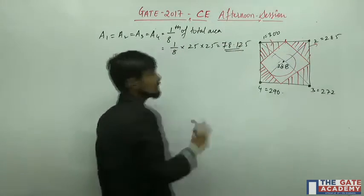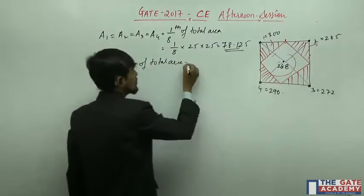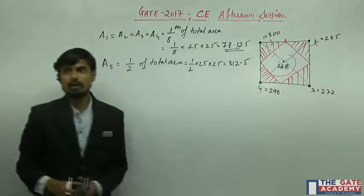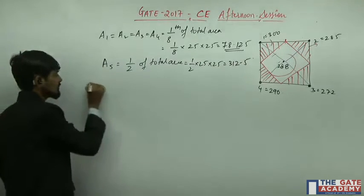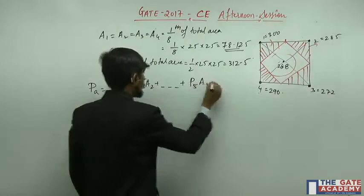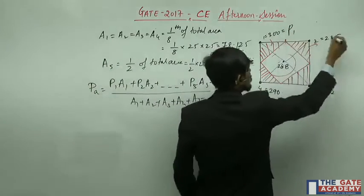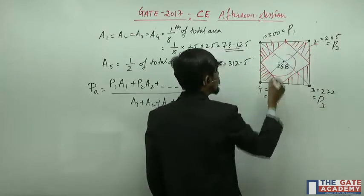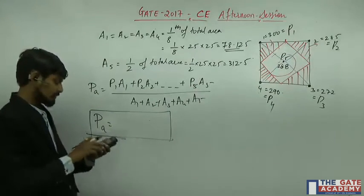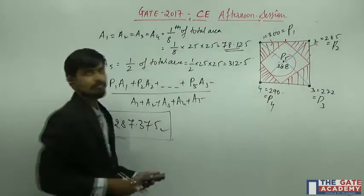Area a5 (the center station) is equal to half of the total area: 1/2 × 25 × 25 = 312.5 km². The Thiessen polygon formula is: P_avg = (P1·A1 + P2·A2 + P3·A3 + P4·A4 + P5·A5) / (A1 + A2 + A3 + A4 + A5). Substituting all known values and calculating directly gives a mean precipitation of 287.375 mm.